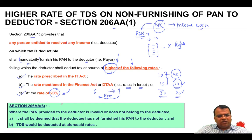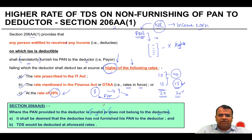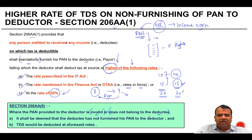What can happen in some cases is that the PAN provided to the deductor is invalid or does not belong to the deductee. In such a case, it shall be deemed that the deductee has not furnished their PAN to the deductor. Accordingly, TDS will be deducted at the aforesaid higher rates under section 206AA. The deductee shall furnish their PAN to the deductor, and both shall indicate the same in all correspondence, bills, vouchers, and other documents sent to each other.